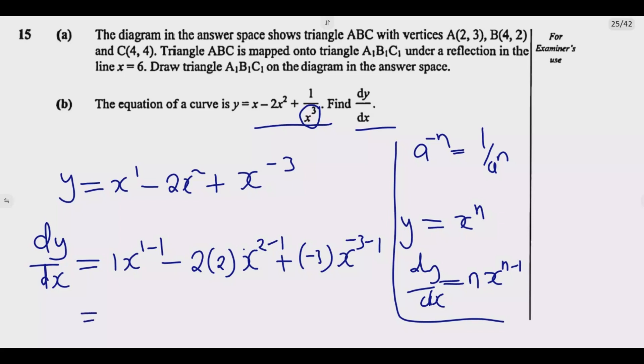Simplifying, we have 1 times X to the power 0. Anything to the power 0 is 1. So it would be 1 times 1, it will be 1. Then minus 2 times 2 is negative 4,